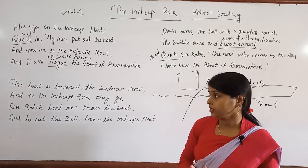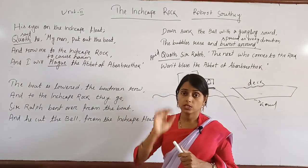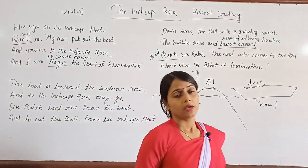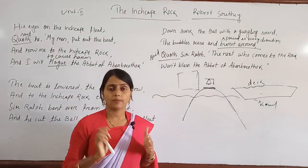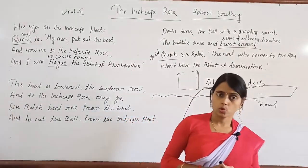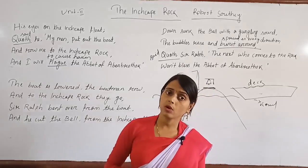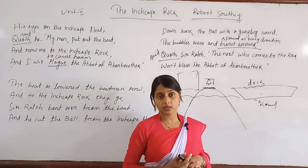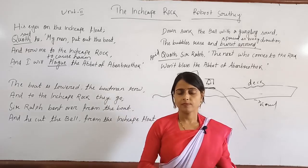So the theme of Unit 2 is: the ship is calm and quiet, but a person named Sir Ralph the Rover noticed the Inchcape bell, had his people row him there, and cut down the bell — separating it from the Inchcape rock. He declared that no one will now bless the Abbot for his noble gift. As they say, if you do wrong, you will be punished. Whether Sir Ralph is punished will be covered in the next unit. Thank you, have a nice time.